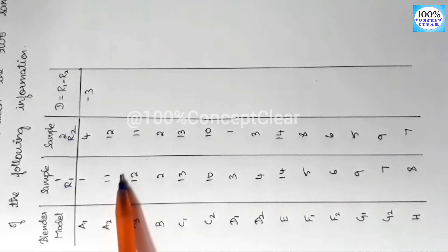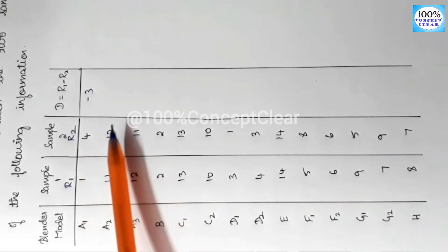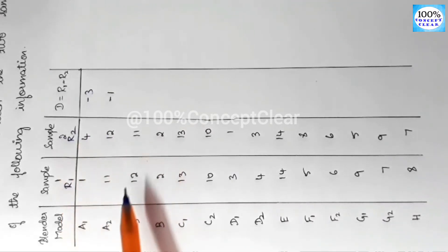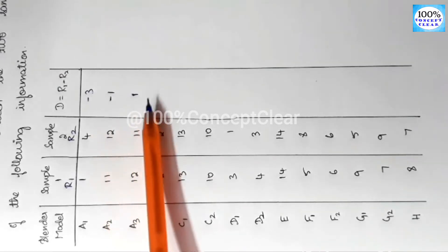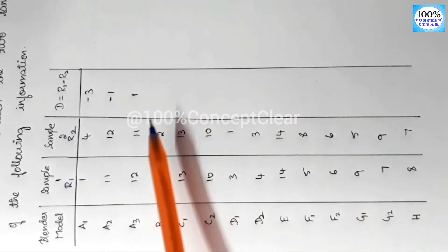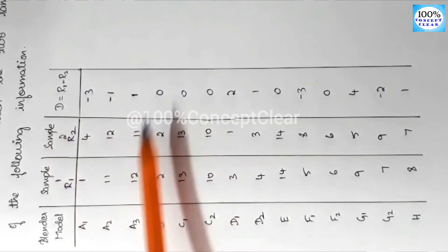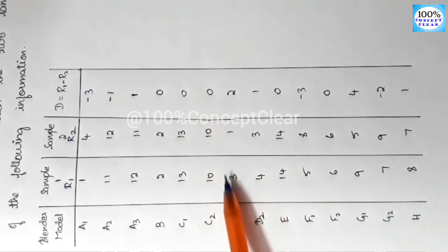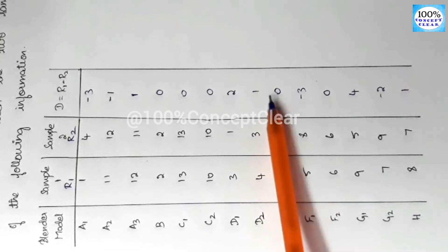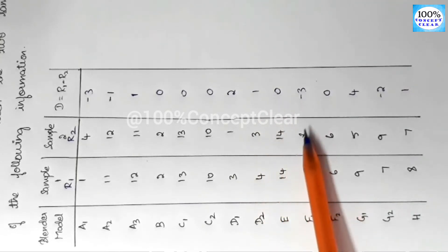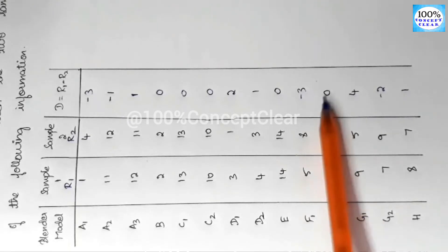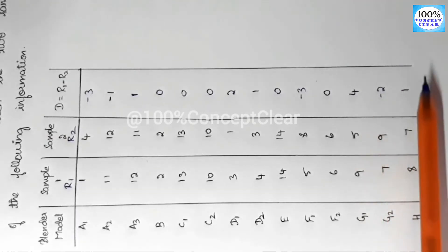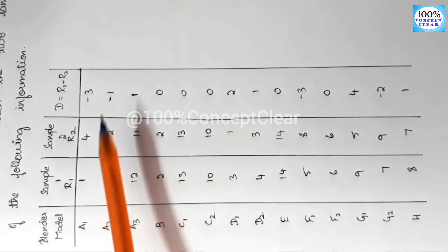Continuing the D values: 2 minus 2 equals 0; 13 minus 13 equals 0; 10 minus 10 equals 0; 3 minus 1 equals 2; 4 minus 3 equals 1; 14 minus 14 equals 0; 5 minus 8 equals minus 3; 6 minus 6 equals 0; 9 minus 5 equals 4; 7 minus 9 equals minus 2; and 8 minus 7 equals 1. Now we have all the D values.